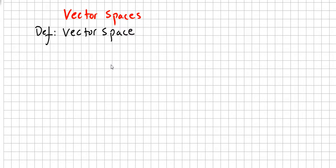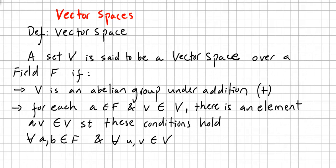We begin a new chapter here with this video about vector spaces. We are going to define what a vector space is. A set V is said to be a vector space — so we are going to define vector space.